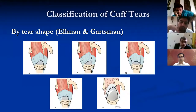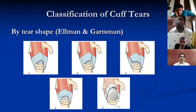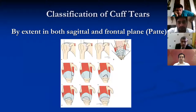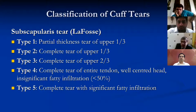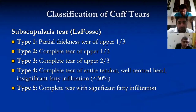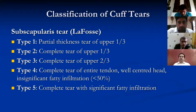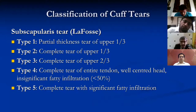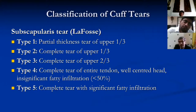Coming to the important and often neglected component: the subscapularis tear, with an incidence of about 10%. The Lafosse classification is very useful. Type 1 is partial thickness tear of the upper one third. Type 2 is complete tear of the upper one third. Type 3 is complete tear of the upper two thirds. Type 4 is complete tear of the entire tendon with the head still centered and not much fatty infiltration — these are repairable. Type 5 is complete tear with significant fatty infiltration, which are irreparable.